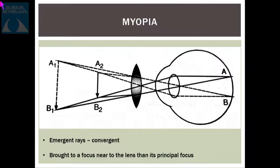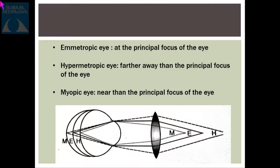For those not accustomed to optics, what you need to remember are just three simple practical points for exams as well as day-to-day application. In an emmetropic eye, the image is at the principal focus. In a hypermetropic eye, it is farther away than the principal focus. And in a myopic eye, it is nearer than the principal focus. Simple three things to remember.